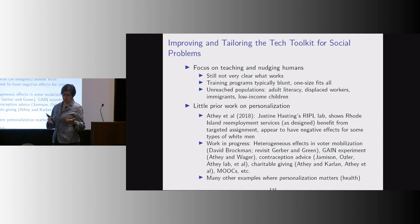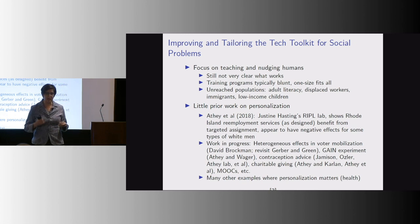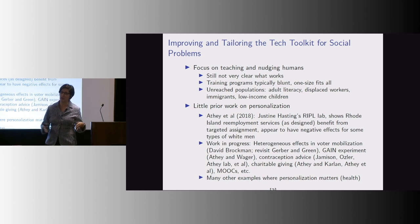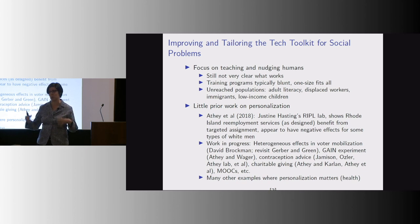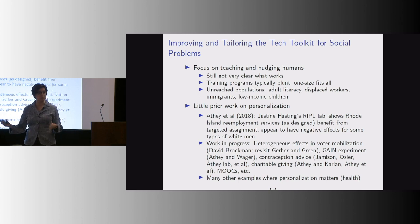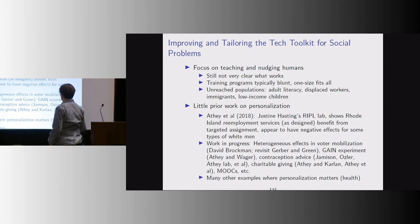One of the big promises of machine learning and AI is that we can have personalization. That's not something we've done a lot of in economics — data sets weren't big enough and we didn't have the tools. We worried about pre-analysis plans and p-value hacking. One focus of my machine learning research is to overcome those things and discover personalized effects while still having good standard errors.